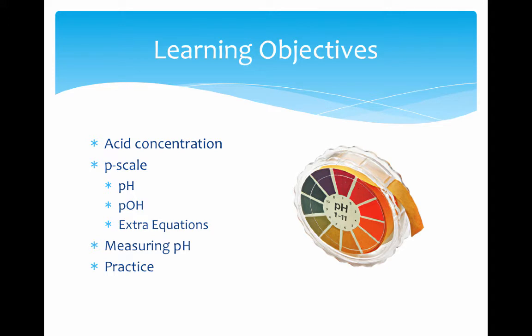We'll start with a quick rundown of the objectives. First, a discussion of acid concentration, a continuation of molarity concentrations from earlier in the chapter. Then we'll focus on the P scale itself, used to measure anything on a logarithmic scale. We'll focus on measuring the concentration of H for acids and OH for bases. We'll wrap it up with extra equations that tie all those values together.